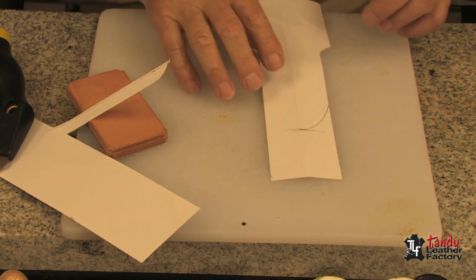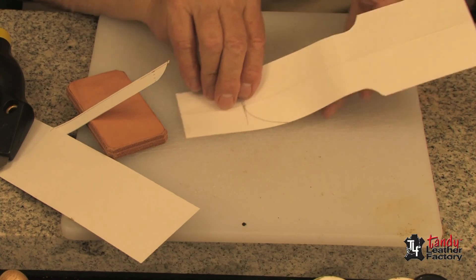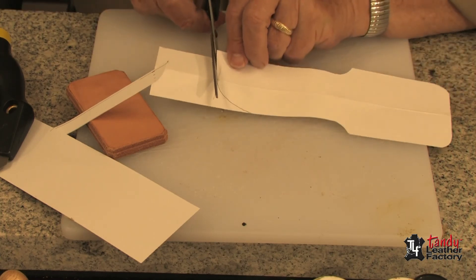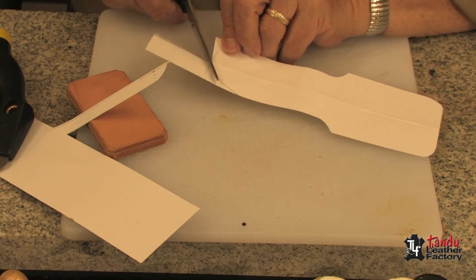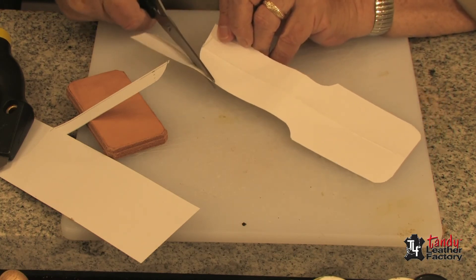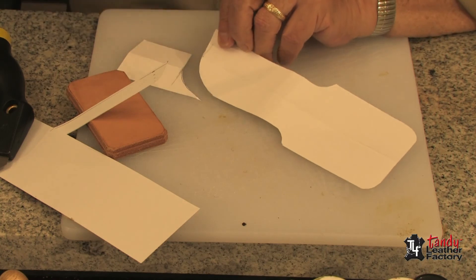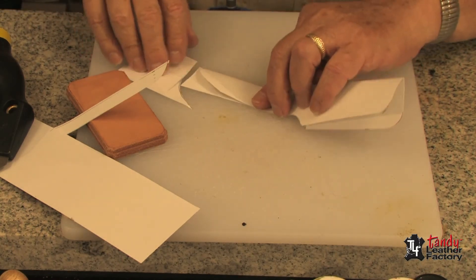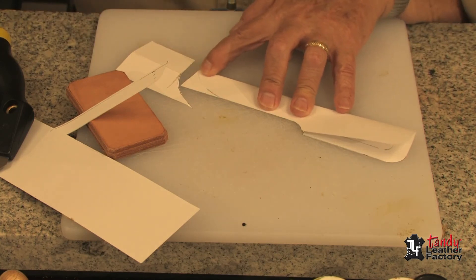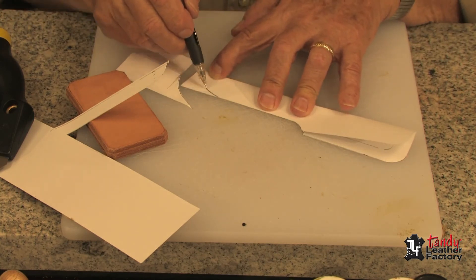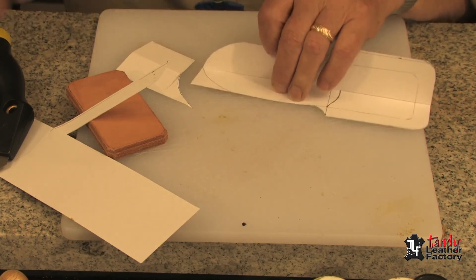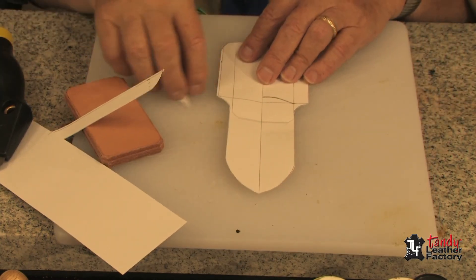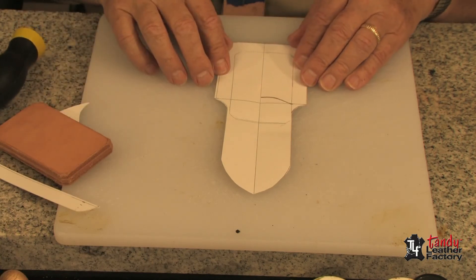Now I can take my pencil and draw any kind of shape on there that I want. I can do an arc as you see there. Now I will take my shears and I will cut that arc, fold it over, mark the other side, and cut that. And now we have the basic shape of our case.